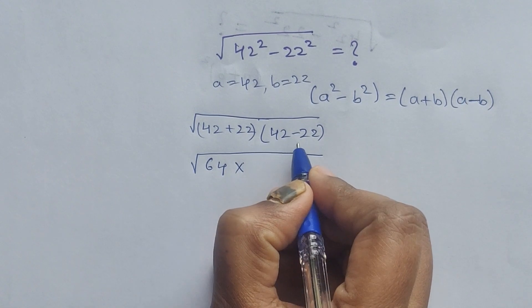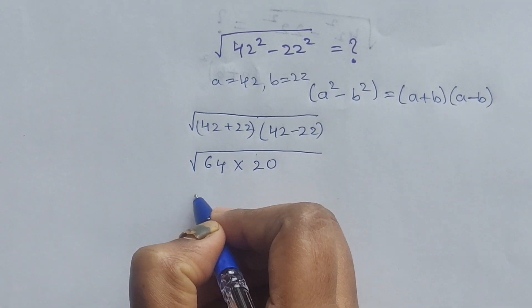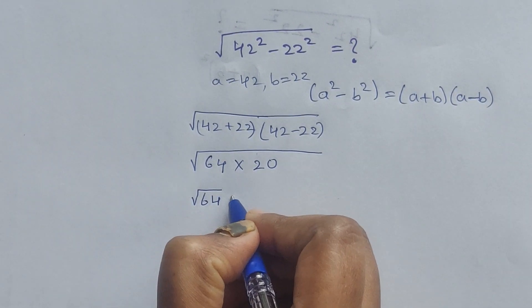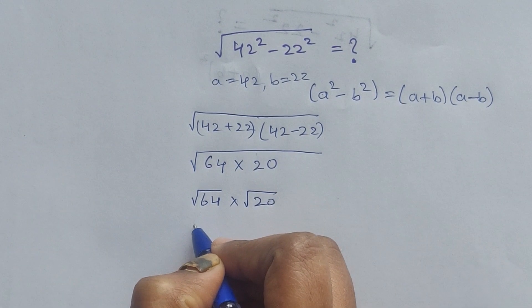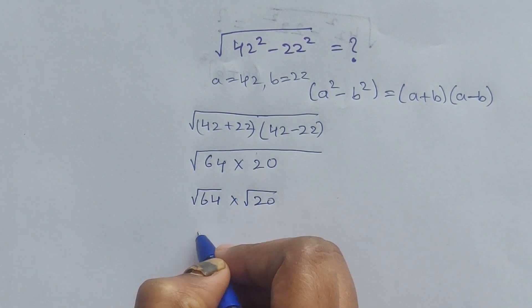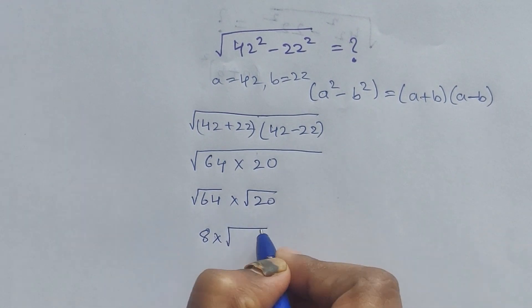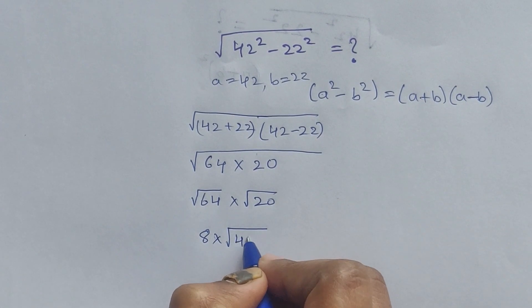Taking the square root of 64 times 20, we can write it as square root of 64 times square root of 20. Square root of 64 is 8, and square root of 20 we can write as 4 times 5.